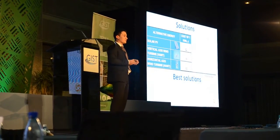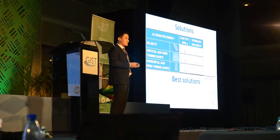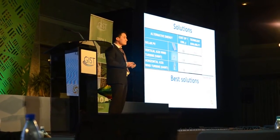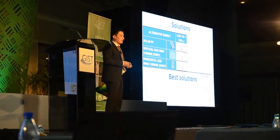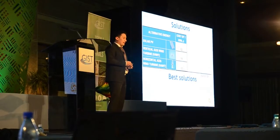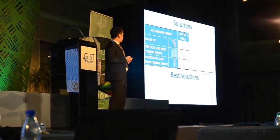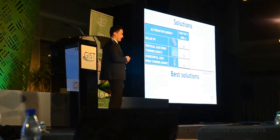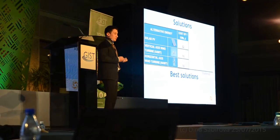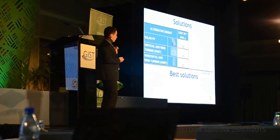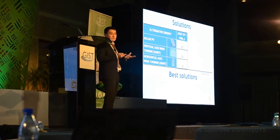This is due to the efficiency — the vertical axis has twice lower efficiency. So, according to this table, we can conclude that the solution would be the horizontal axis wind turbine, because it's the cheapest one.